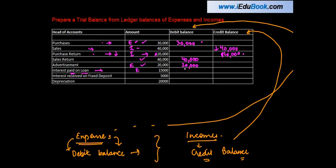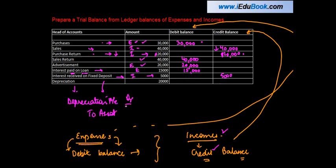Interest paid on loan — when you pay interest, it's an expense for you. Interest received on a fixed deposit — received means it's an income for you, so it has a credit balance. Depreciation is also an expense. The entry for depreciation is: debit the depreciation account and credit the relevant asset, so depreciation has a debit balance.